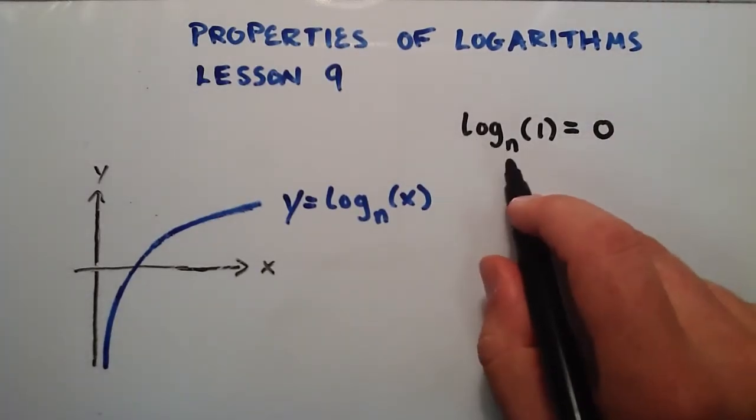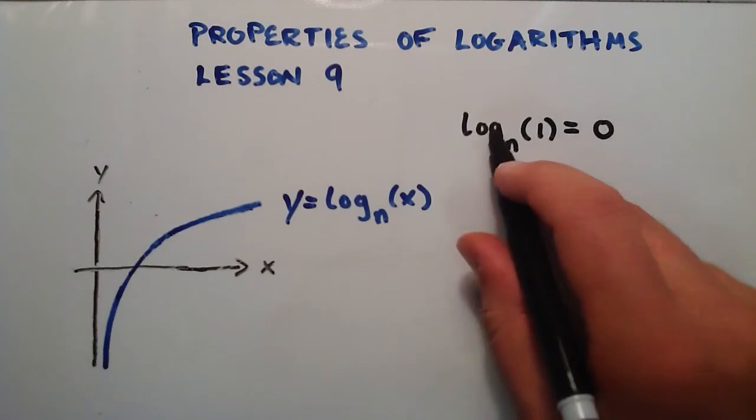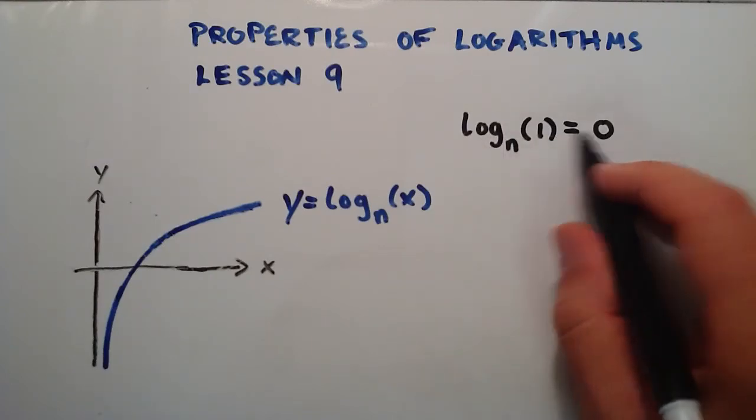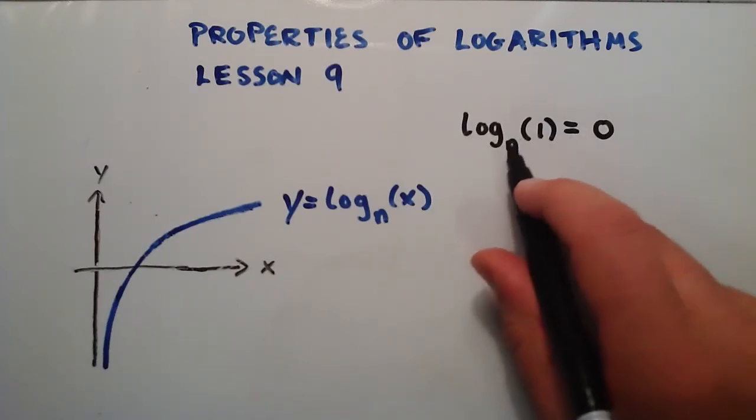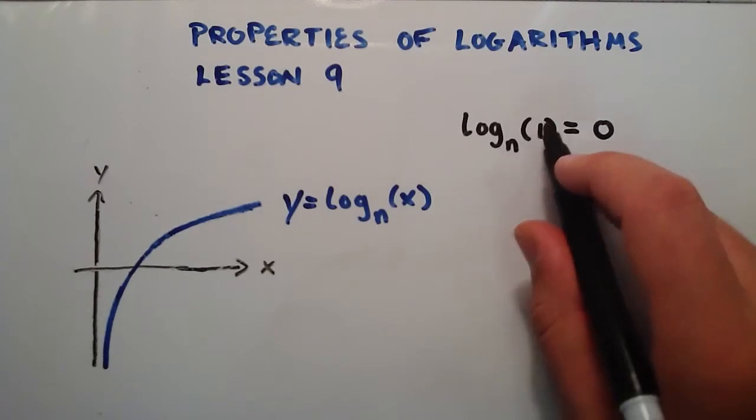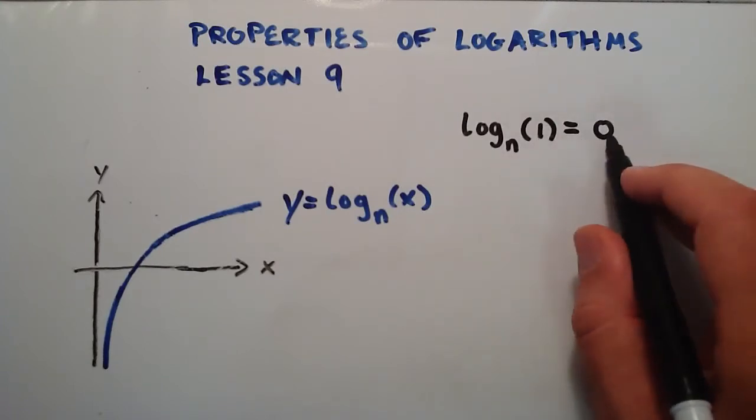So log base 3 of 1 equals 0, log base 5 of 1 equals 0, log of any base you want, any number you choose, that has an argument of 1 is equal to 0.